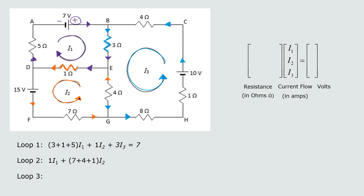Looking at I3 in loop 2: I3 is going in the opposite direction from I2, and they both pass through the 4-ohm resistor. Since I3 is working against I2, it contributes −4·I3. For the voltage in loop 2, the I2 current flow is coming from the negative end of the power source, so the voltage is −15. The loop 2 equation is: 1·I1 + (7+4+1)I2 − 4·I3 = −15.